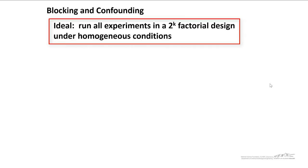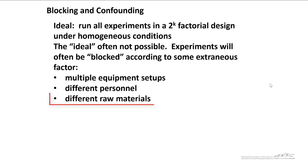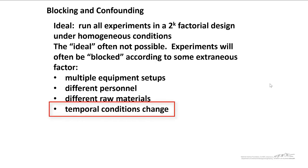Ideally, you would run all the experiments in a 2 to the k factorial design under homogeneous conditions. The ideal is often not possible. Experiments will often be blocked according to some extraneous factor. I've talked about these in that previous screencast on blocking, but we can have multiple equipment setups, different personnel, different raw materials, and the temporal conditions can change.